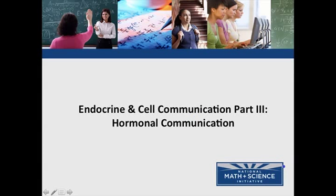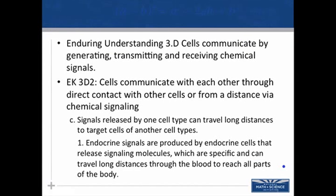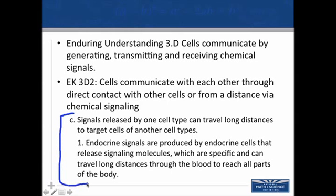Today we'll look at endocrine and cell communication part 3, focusing specifically at hormonal communication. In the AP Biology curriculum framework, this topic is addressed in C1, which tells us that signals released by one cell type can travel long distances to target cells of another cell type. Endocrine signals are produced by endocrine cells that release signaling molecules which are specific and can travel long distances through the blood to reach all parts of the body.